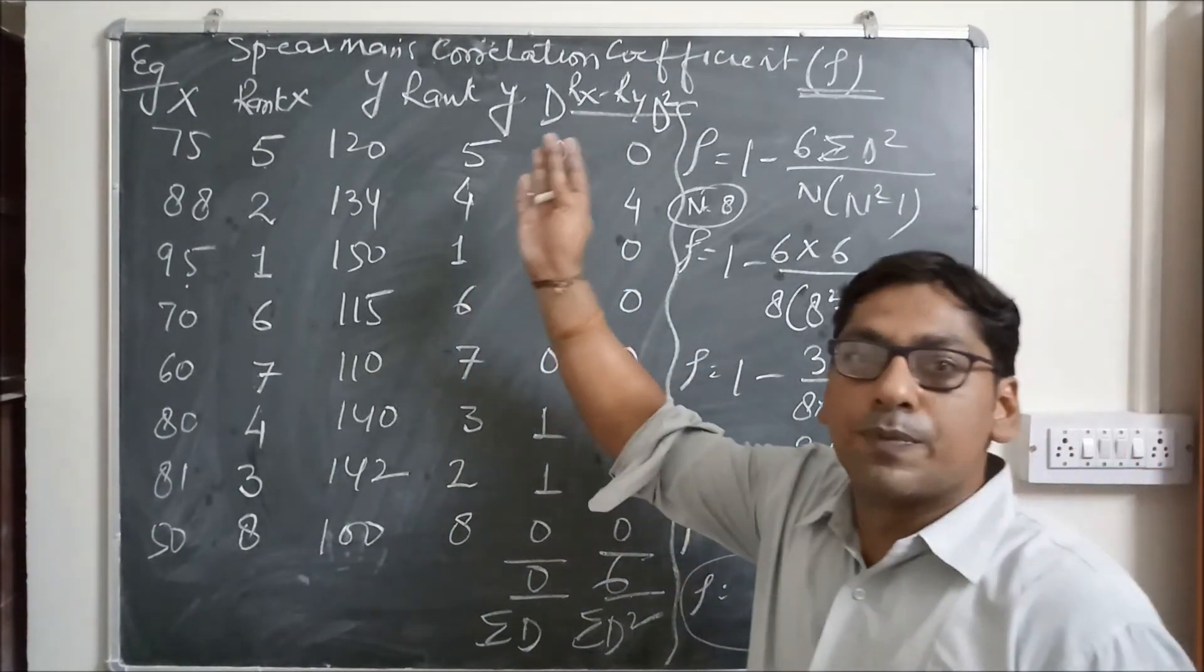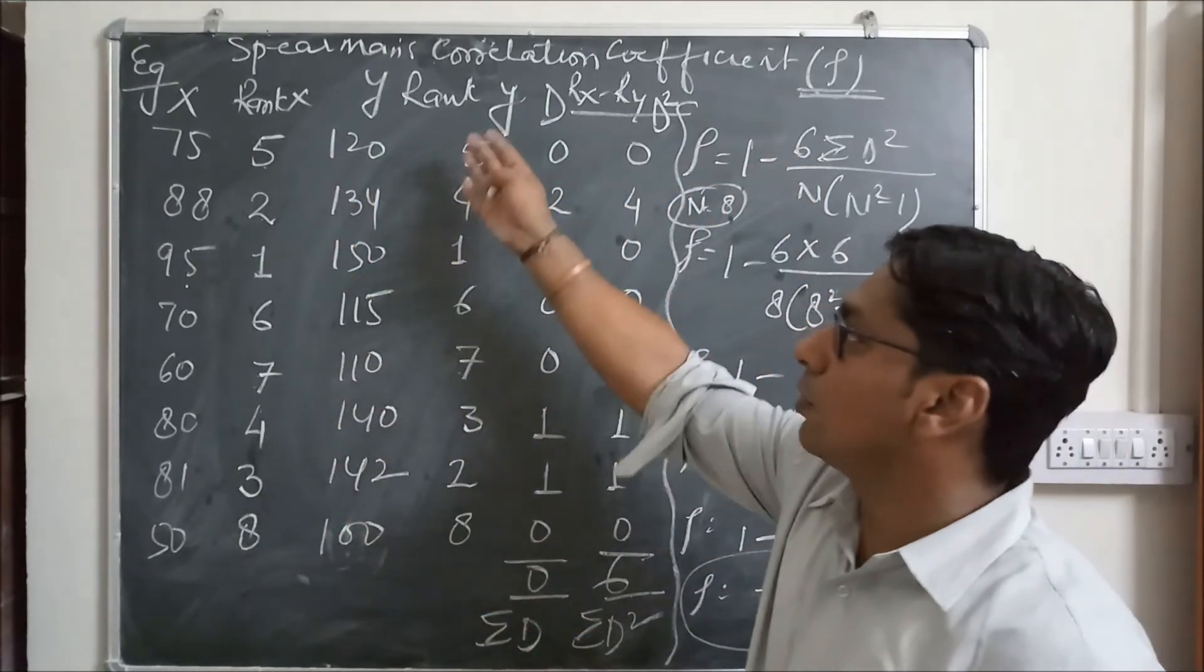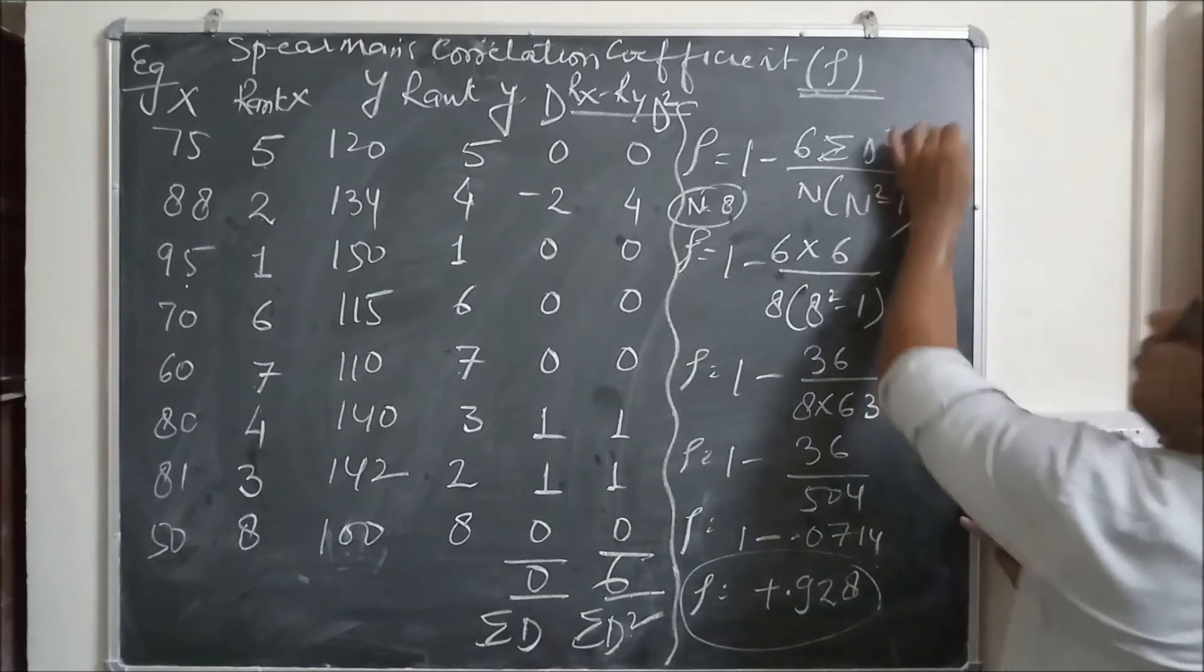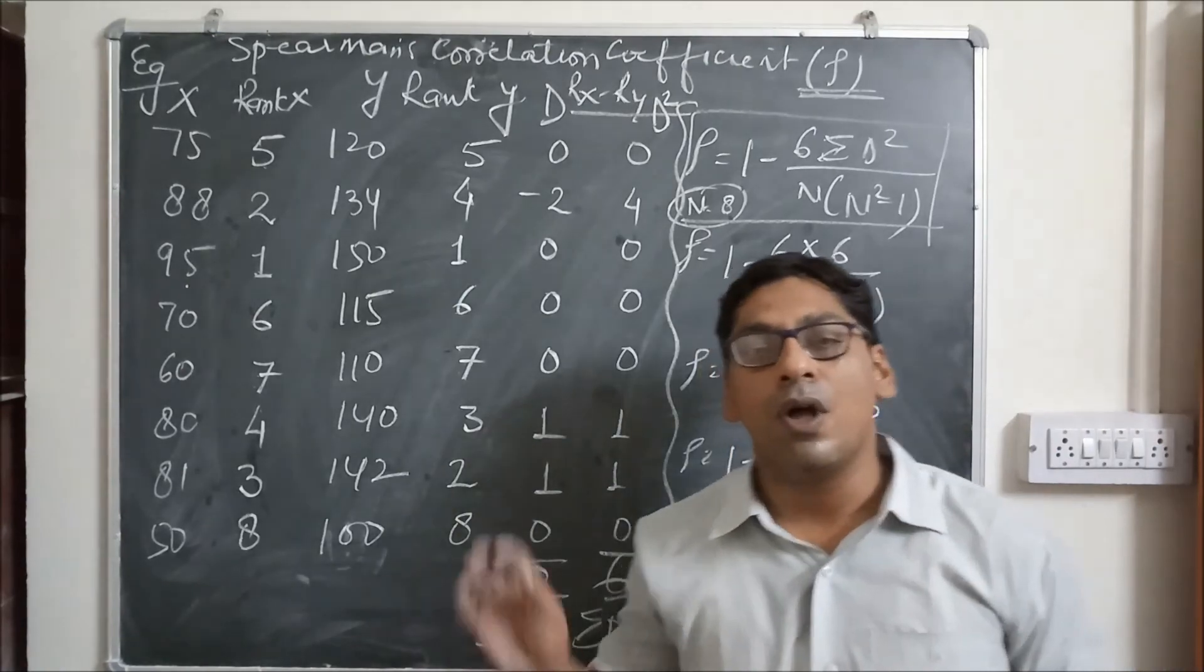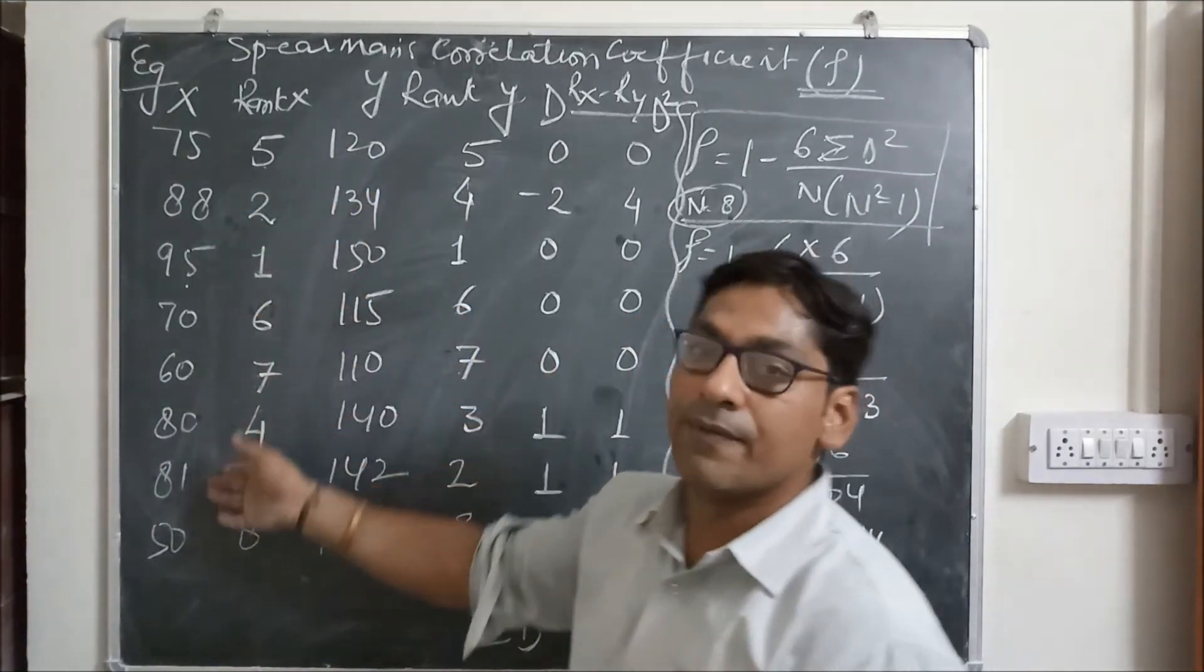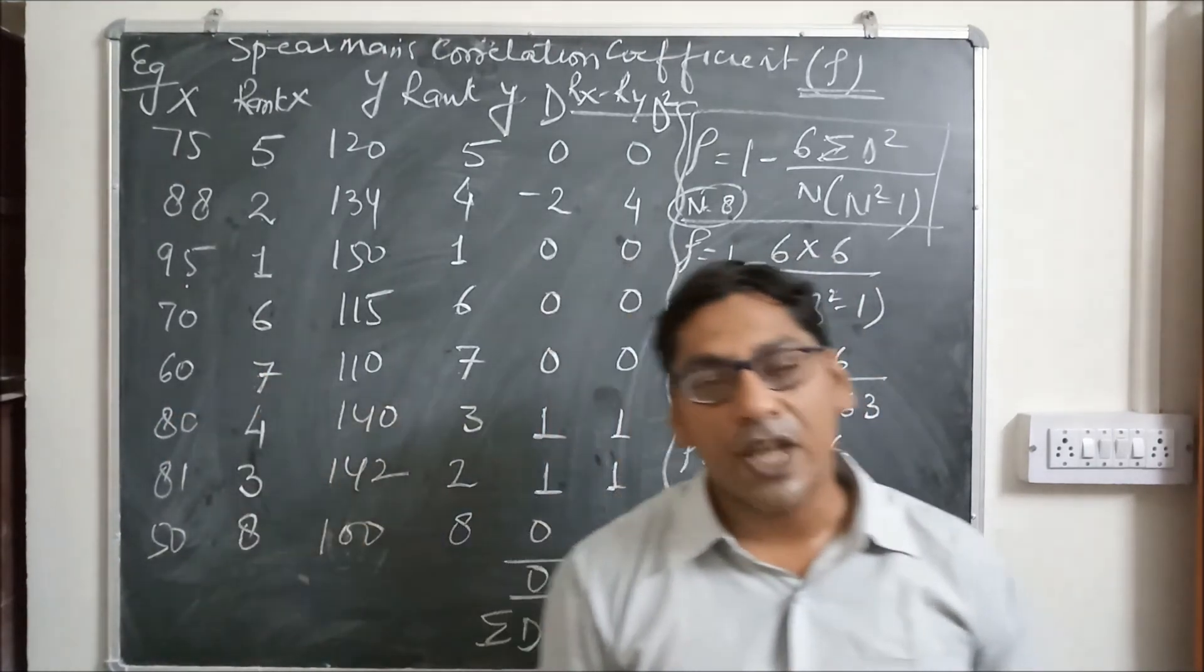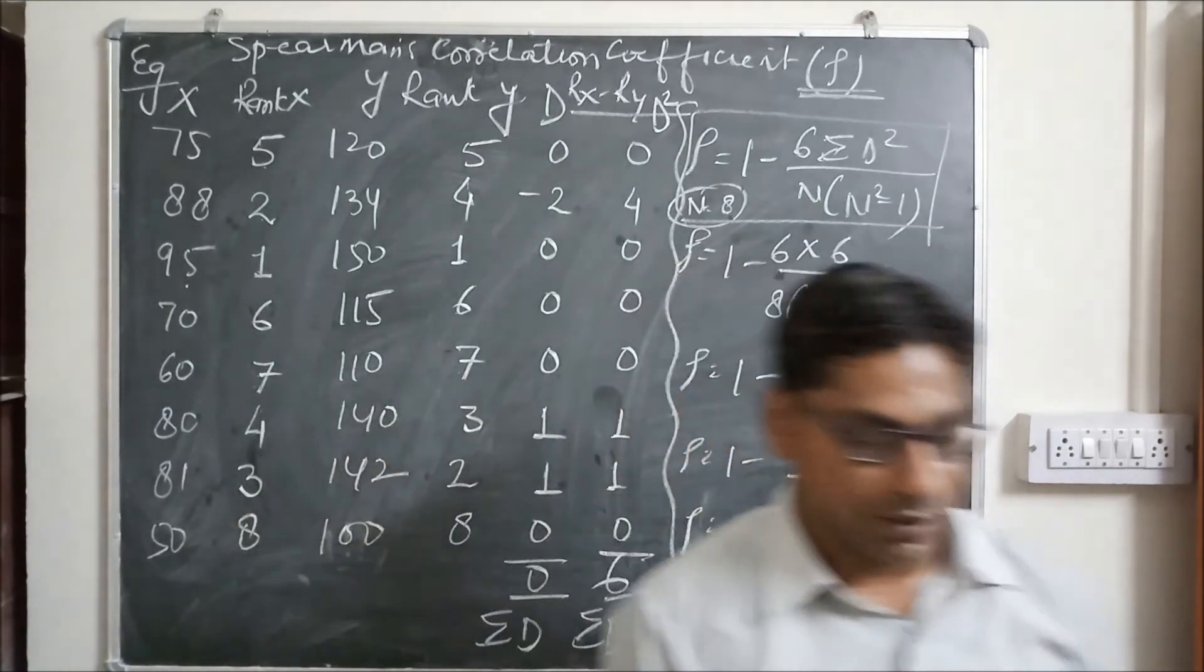This is the solution of Spearman's correlation coefficient. First we give rank to both data, then we calculate D rank X minus rank Y. The total of D should be 0, then D square, and use formula 1 minus 6 sigma D square upon N square minus 1. Now in this method there is another topic known as tied rank, which will be explained in the next chapter. Thank you so much, hope you understand this method.